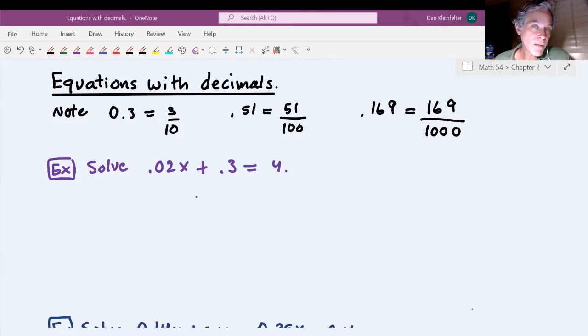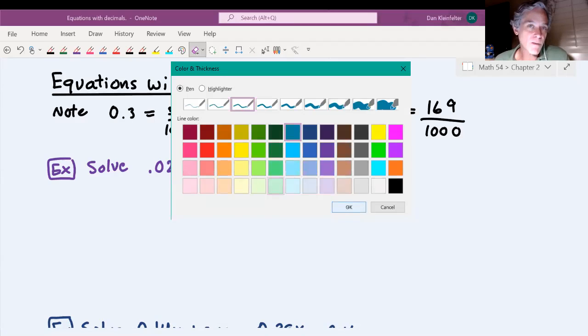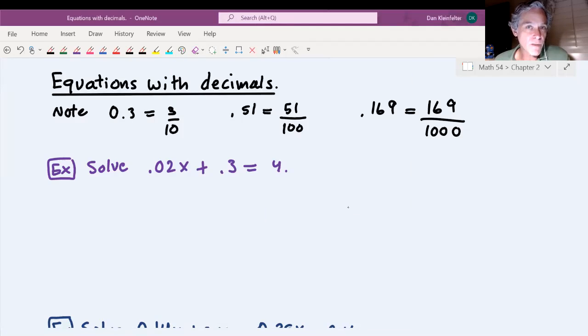So as you know, we can multiply both sides of an equation by the LCM of the denominators and that clears the fractions out. We can see that that would do the same thing here even if there are decimals involved. We're going to try that on this one by rewriting the equation in terms of fractions. You have 0.02x plus 0.3 equals 4.